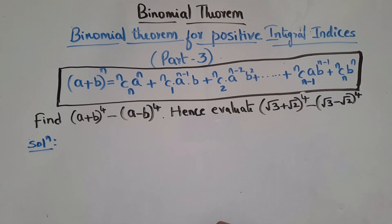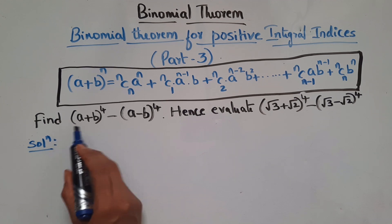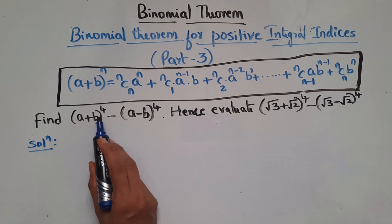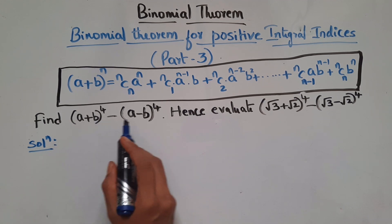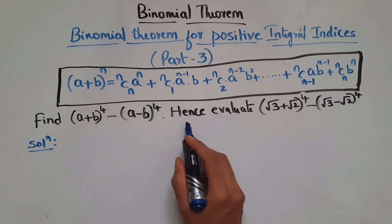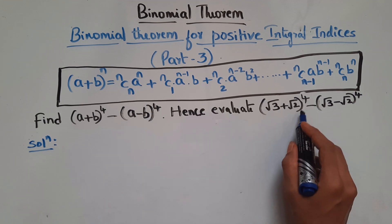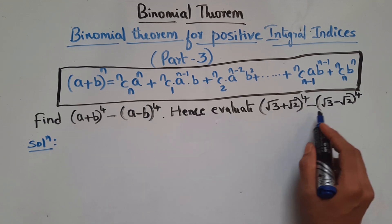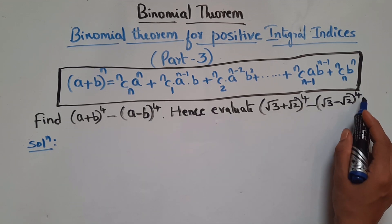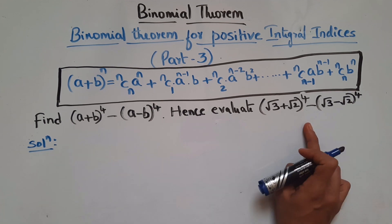Let's continue with the problems. We have: find (a + b)⁴ minus (a - b)⁴, hence evaluate (√3 + √2)⁴ minus (√3 - √2)⁴. So first let's find the general expression and then we will evaluate the specific values.